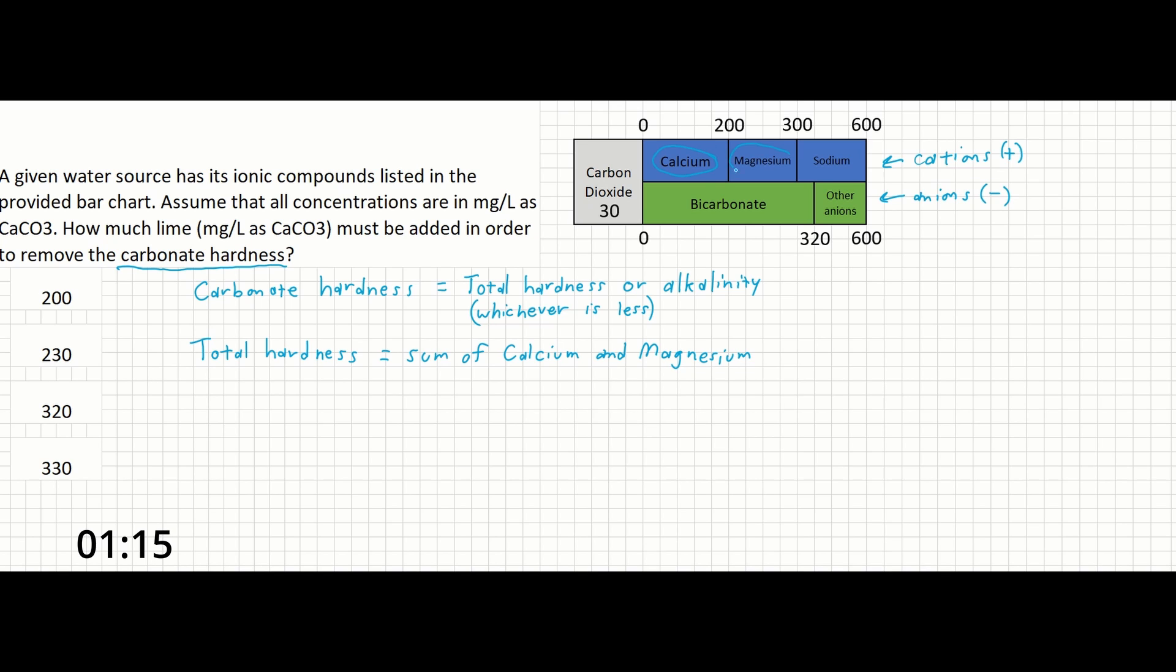The alkalinity is going to be equal to the sum of the calcium and magnesium that overlaps with the bicarbonate. If the total hardness is less than the bicarbonate, then there cannot be any noncarbonate hardness left over. It is all carbonate hardness.